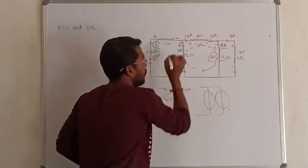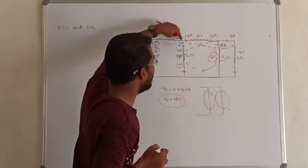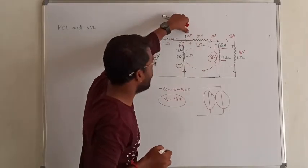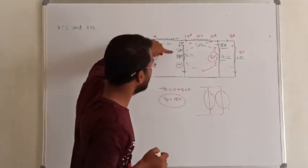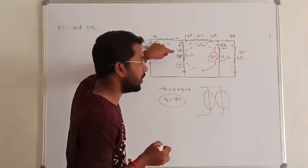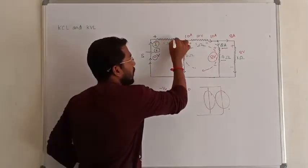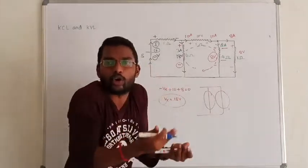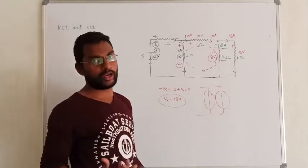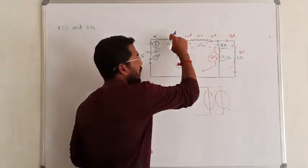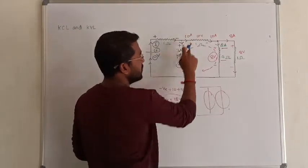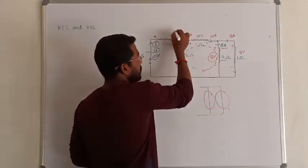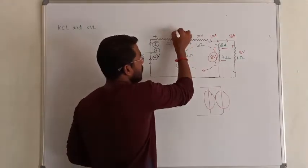Applying KCL again: the current in one line is 10A and in this branch is 3A. Incoming current must equal outgoing current. So outgoing current is 3A plus 10A equals 13A. The incoming current must therefore be 13A.